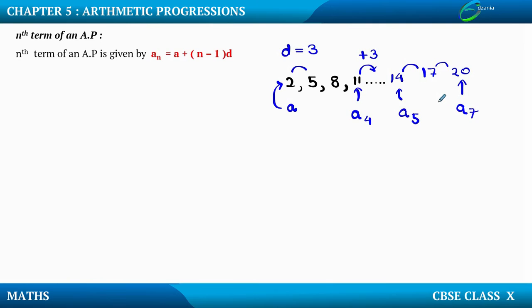Now if I ask you what is the hundredth term, it seems quite difficult, because I have to keep adding 3 up until I reach the hundredth term — a very lengthy process. Finding the fourth, fifth, or seventh term was easy because they were nearby. But finding the hundredth term or the ninetieth term will be time-consuming, even though we would eventually get the answer.